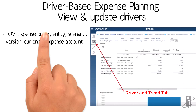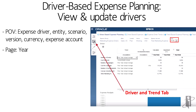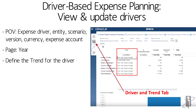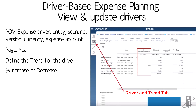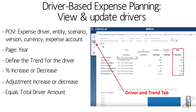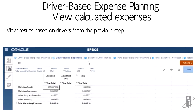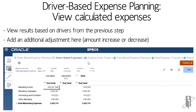At the top I have my Point of View, where I'm looking at things like my expense drivers, what entity scenario version I'm on, currency, or what expense account. In my example here, I'm on total marketing expense, looking across my pages where I can change the drop-down. I'm looking at 2016. Down below I'm looking at the trend for the driver — what percentage do I want to increase or decrease the driver by, what do I want to base it on? Maybe it's prior year actuals average, maybe it's the current month actual. When I finish doing all the math, I get to what the new driver value is going to be. It will then take those assumptions, and looking at my percent increase and decrease, multiply those times some sort of dollar value to give me a total dollar value.